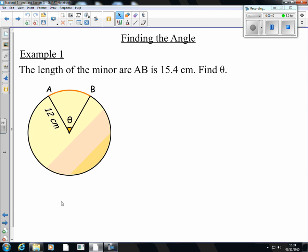You'll notice here we're told what the arc is. Before we had to figure out what the arc was. Now we're told what the arc length is and we have to figure out what theta is. So we're told that it's 15.4 centimeters and we are looking to find theta, which is the angle at the center of the sector.